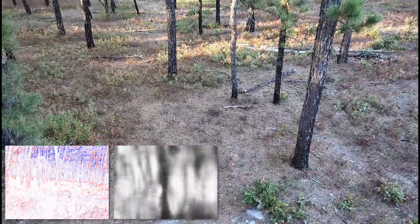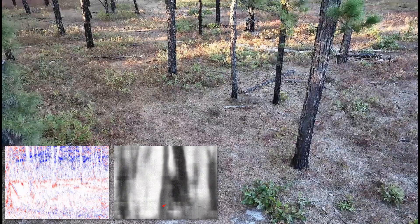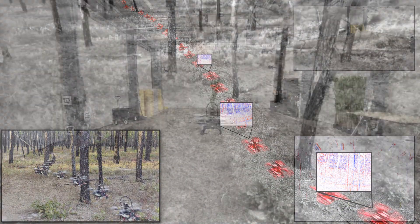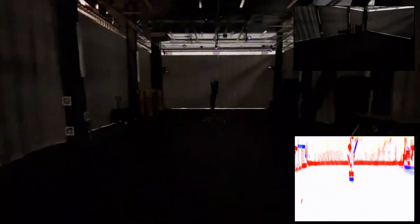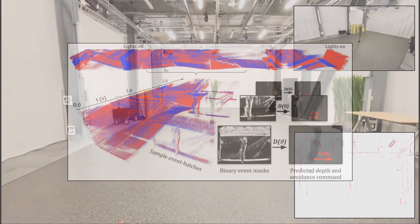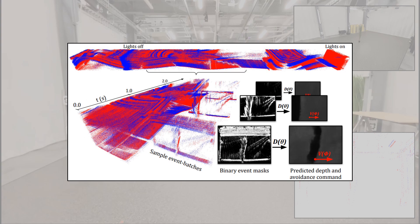The bottom left shows the event stream and predictions on board the drone. We can also utilize an event camera's high dynamic range to avoid obstacles in the dark. Here, we present the event volume from this trial with some extracted sample event batches and their corresponding binary event masks and predictions.